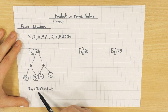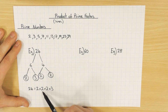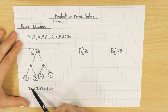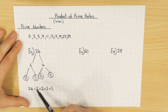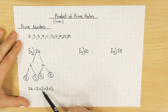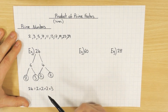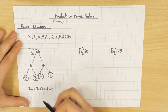Let's double check it: 2 times 2 is 4, times 2 is 8, times 3 is 24. So I've now written 24 as a product — timesing all of the prime numbers that are factors. Hence the name.